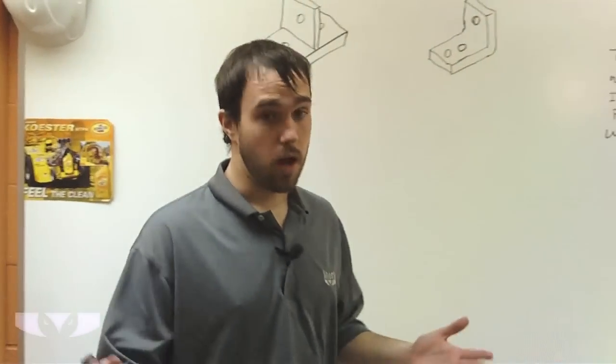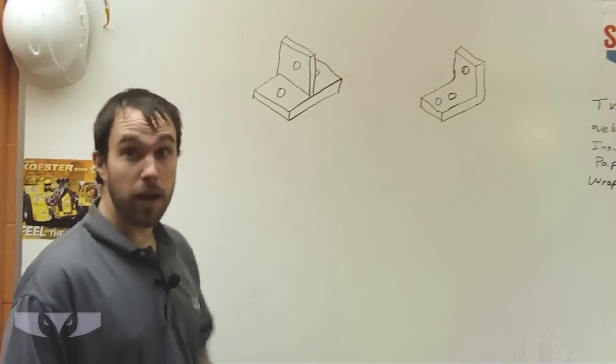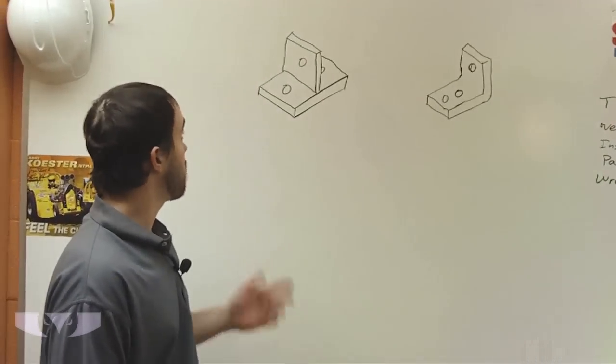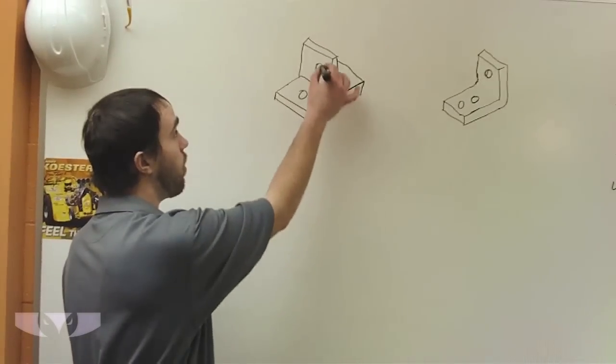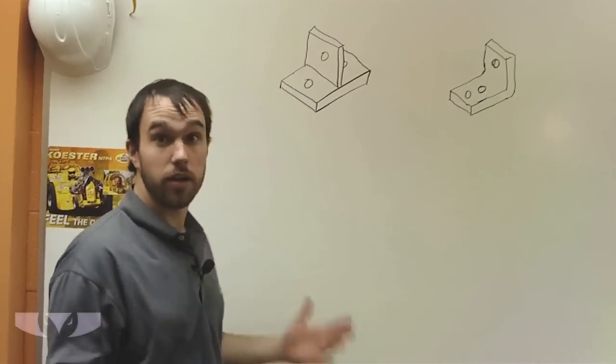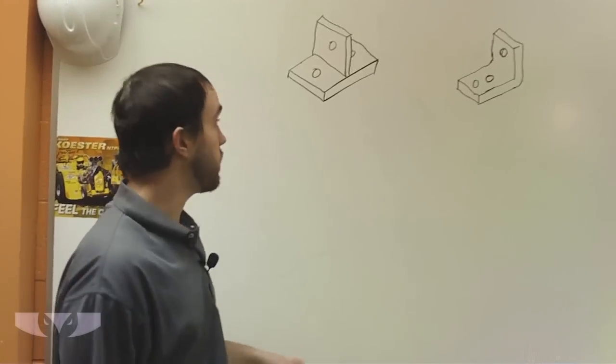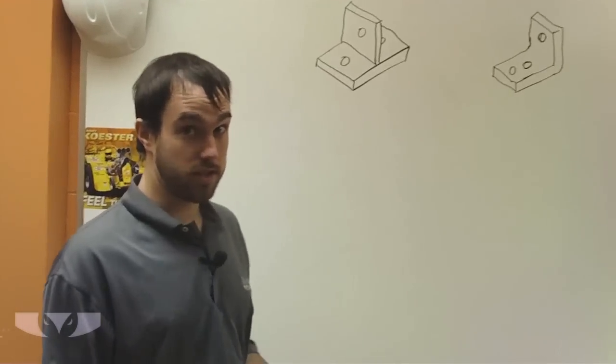This is something that a lot of people don't think about, but it can really save you some money. So I've drawn some examples on the board here. We got a T bracket. This is just a really basic part. You want to mount this to a wall and then have this little end coming off to try to mount something to that.